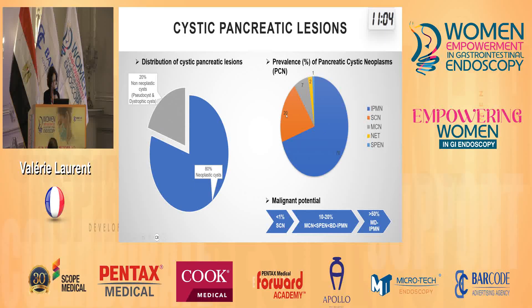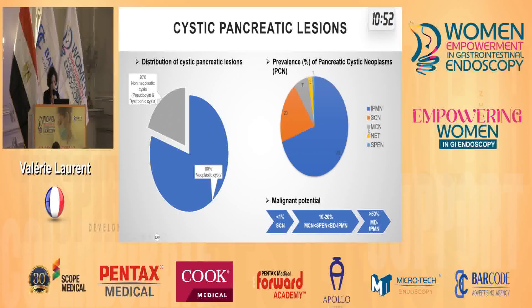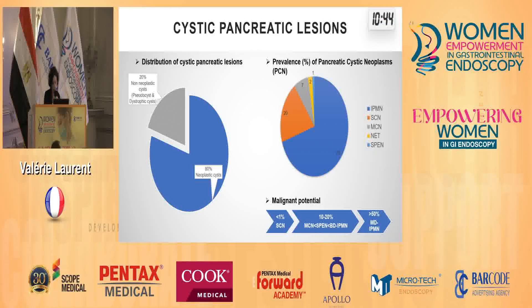It can also be a serous cyst — a benign lesion that remains so. And in the middle, we have other lesions: mucinous cysts, neuroendocrine tumors, and solid pseudopapillary epithelial neoplasm, with intermediate risk. I will develop those types later.